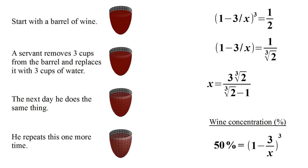We end up with X being equal to three times the cube root of two, all divided by the cube root of two minus one. And this gives us our answer that there were approximately 14.54 cups of wine in the barrel to start with.